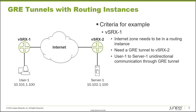Those two devices are connected together through the internet. We have user1 that connects into vSRx1, and server1 that connects with vSRx2. What we need to do is first put the internet zone in a routing instance — that's the zone connecting vSRx1 directly to the internet, and it will be called 'internet.' Then we need to create a GRE tunnel from vSRx1 to vSRx2 and ensure that user1 can communicate with server1 through that GRE tunnel.